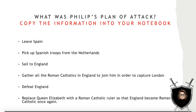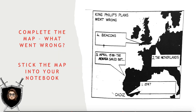Copy the following into your book — what was Philip's plan of attack: The Armada was to leave Spain, pick up the Spanish troops in the Netherlands, sail to England, gather all the Roman Catholics in England to join him, in order to capture London, defeat England, and replace Queen Elizabeth with a Roman Catholic ruler so that England became Roman Catholic once again.